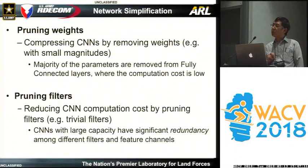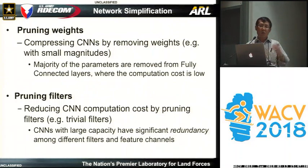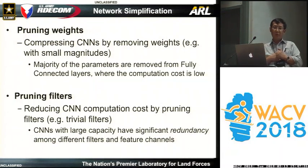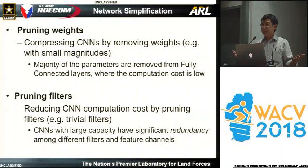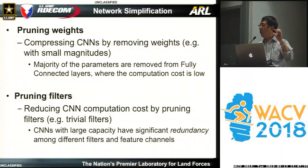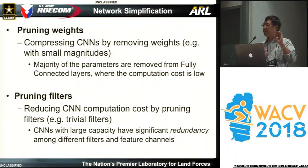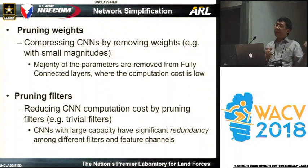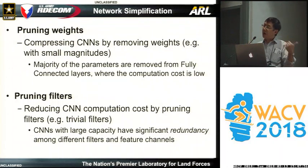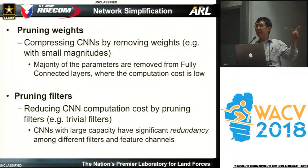Normally we have two approaches to simplification according to the application requirements. One is to try to compress the network by reducing the number of parameters. For example, some parameters whose magnitude is very small, or some that are very correlated with each other — that kind of weight we can reduce. However, with this method we can reduce the size of the network, but the timing is not that efficient, because most of the reduction is on the fully connected layer.